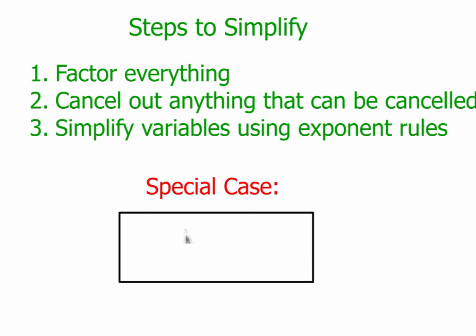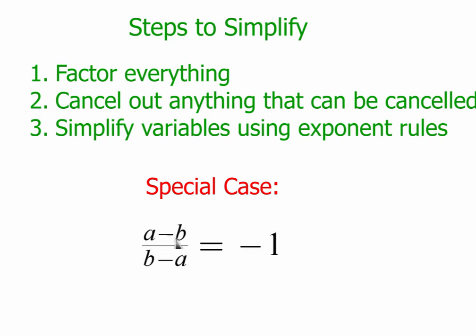There is one special case we need to be aware of. And that is if I have a minus b over b minus a, that's always going to equal negative 1. So if it's the same two numbers being subtracted, but in the different order, when you divide them, that will always equal negative 1.